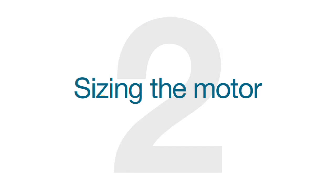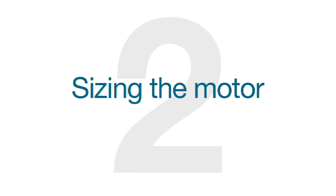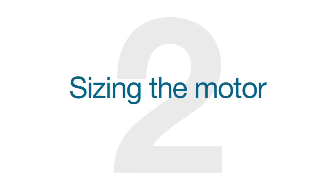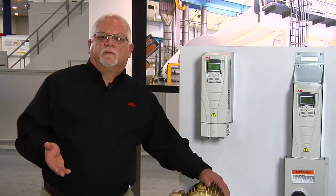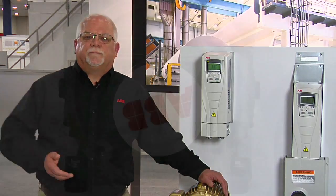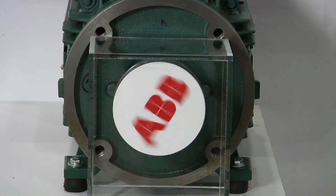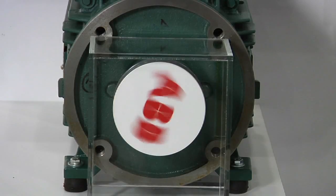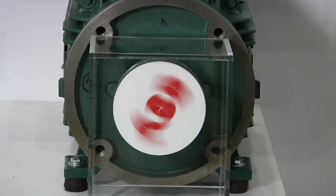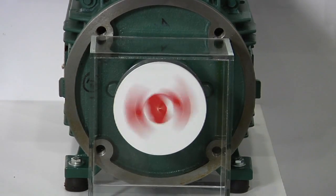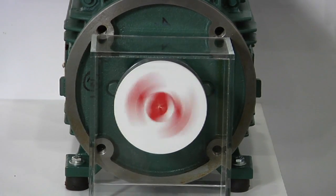Now that we know the application requirements we can determine the motor size. To do this we need to calculate two things: torque and speed. When calculating torque it is important not to undersize the application, as this will lead to overheating and a diminished life of the motor and drive.